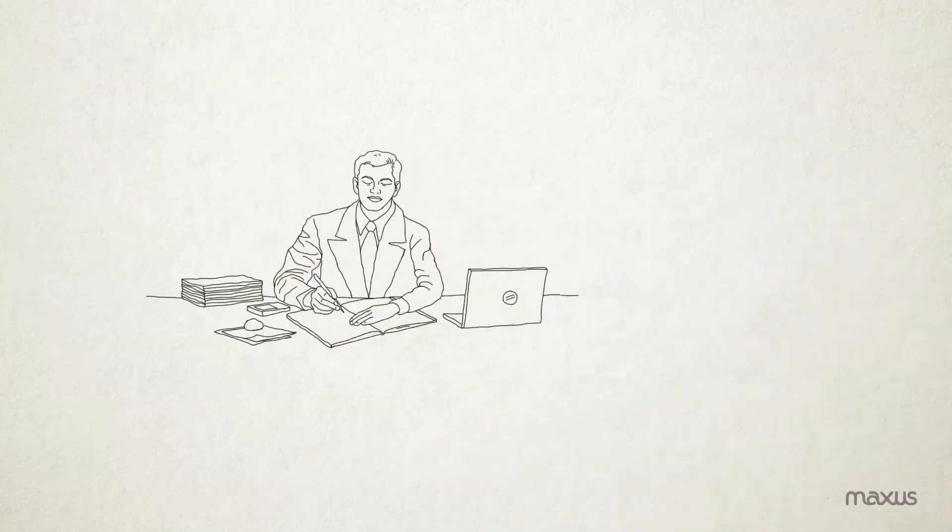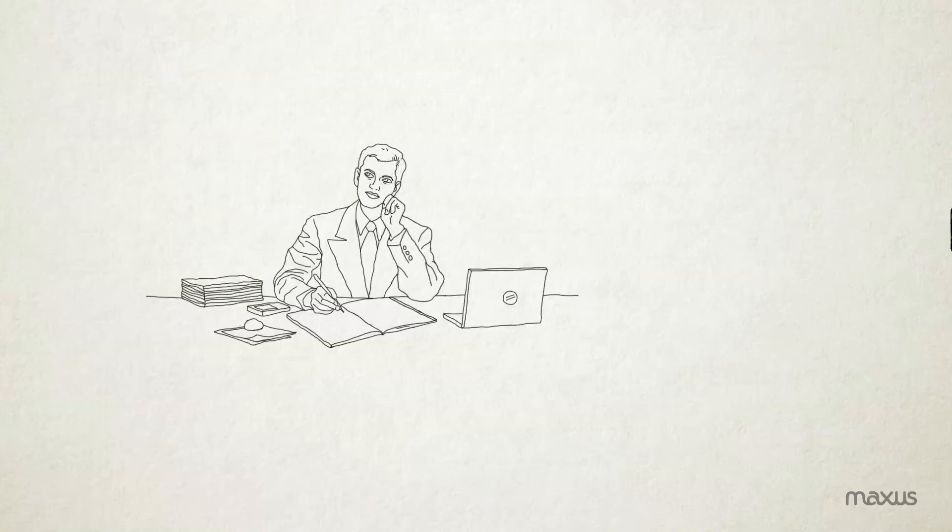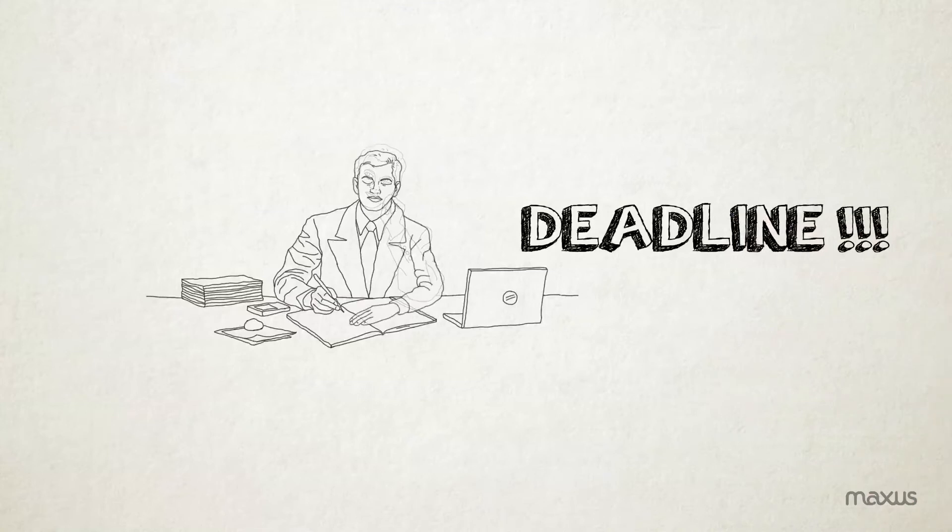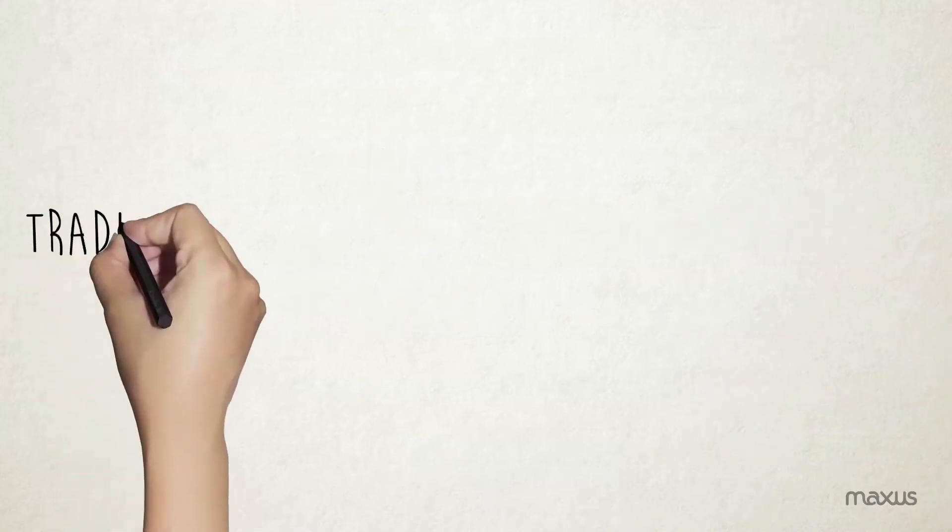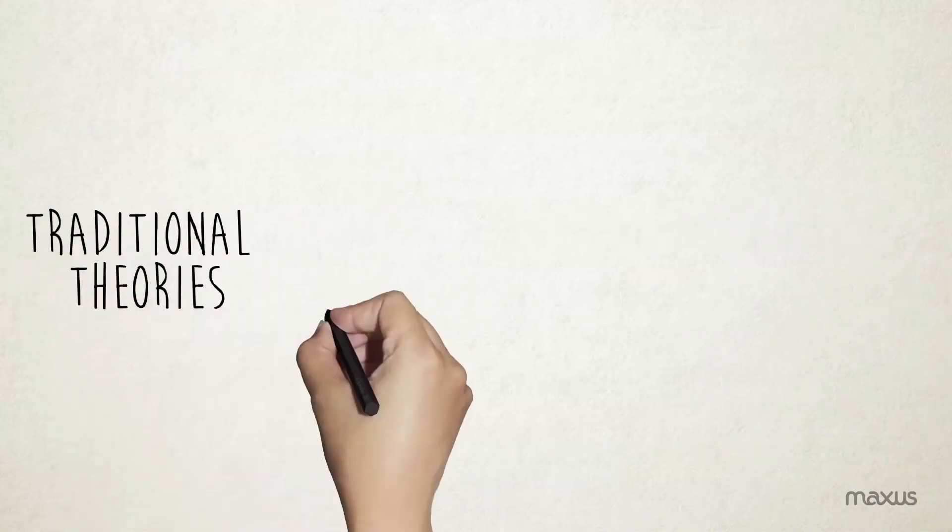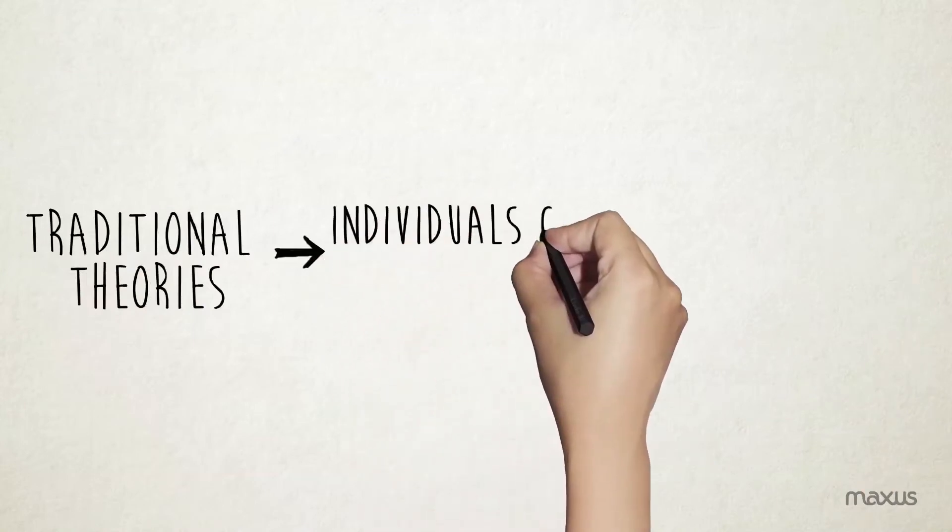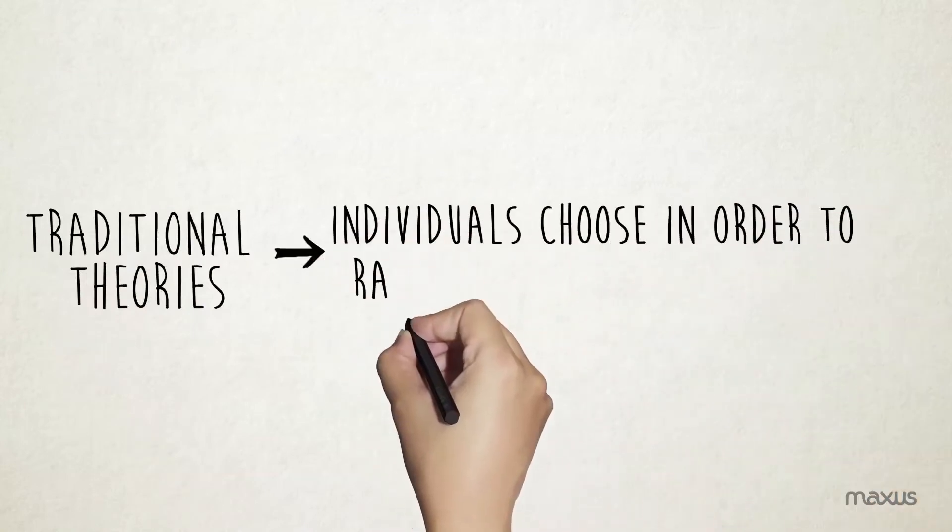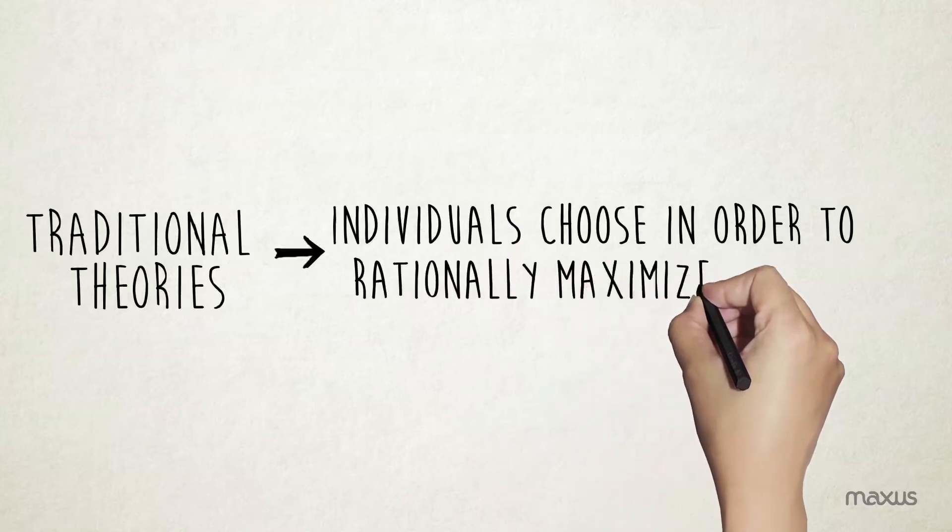The rollout team thought that people are too busy with their daily chores and therefore not taking the effort. So they even put a deadline. But even that cut no ice. Traditional theories of consumer behaviour suggest that individuals choose in order to rationally maximize utility. But is that really so?